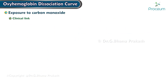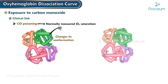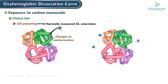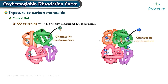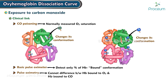Most individuals with carbon monoxide poisoning will have a normally measured oxygen saturation. The binding of oxygen to hemoglobin changes its conformation, and similarly, the binding of carbon monoxide to hemoglobin also changes its conformation. A basic pulse oximeter can detect only the percentage of hemoglobin that is in the bound conformation and cannot tell the difference between hemoglobin bound to oxygen and hemoglobin bound to carbon monoxide.